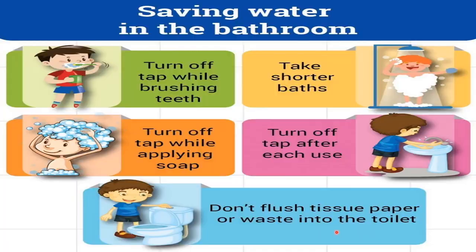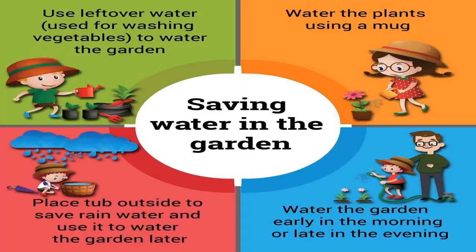Saving water in the garden: use leftover water from washing vegetables to water the garden, water the plants using a mug, place a tub outside to save rainwater and use it to water the garden later, and water the garden early in the morning or late in the evening.